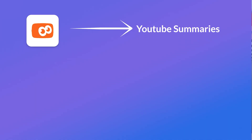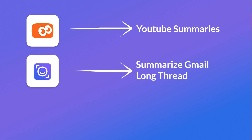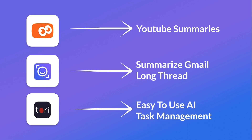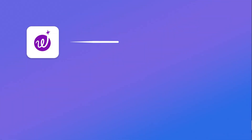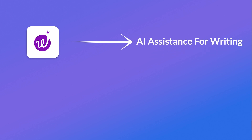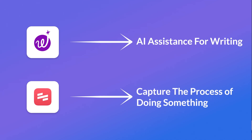To summarize all the apps mentioned: number one, Atify — a great way to get YouTube summaries. Number two, Read AI — great for summarizing long Gmail threads. Number three, Tori — an AI task management Tamagotchi experience for a fun way to manage tasks. Number four, Wordtune — a Grammarly alternative for AI writing assistance.